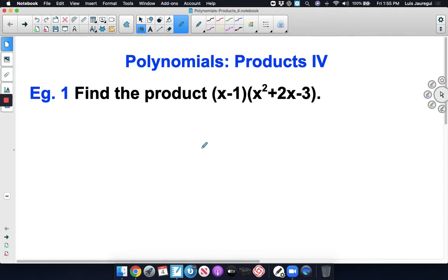Welcome. In this video, we'll be analyzing the product of polynomials, part 4. Let's take a look at our example, Example 1. Find the product of the quantity x minus 1 and the quantity x squared plus 2x minus 3.